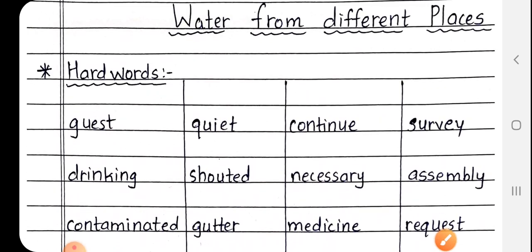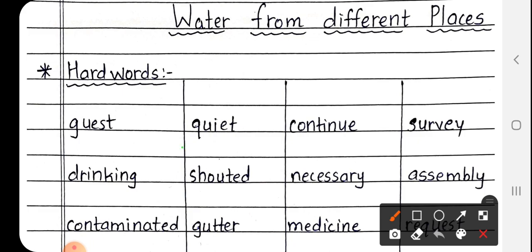Next, quiet, Q-U-I-E-T. Quiet matlab shant ya phir chup. Next is shouted, S-H-O-U-T-E-D. Shouted matlab chillana. Next is gutter, G-U-T-T-E-R. Gutter means nali. Jo ganda paani bahne ke liye jo jagah hoti hai, usse kya kehte hai? Gutter. Matlab ki nali.